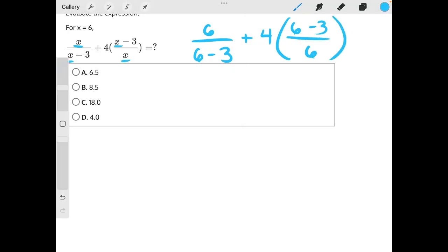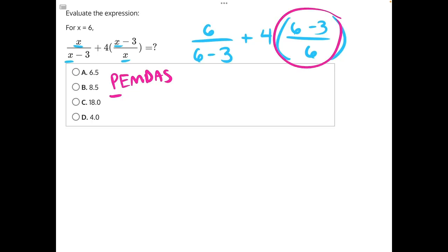Now we must use our PEMDAS. So we need to start with our parentheses, this big guy right here. We have 6 minus 3 in our numerator, which would give us 3 over 6.